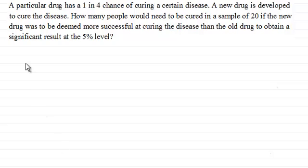And to demonstrate this I've got this question here. We've got a particular drug which has a one in four chance of curing a certain disease. A new type of drug is developed to cure the disease. How many people would need to be cured in a sample of 20 if the new drug was deemed to be more successful at curing the disease than the old drug to obtain a significant result at the five percent level?